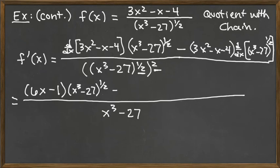And then we have minus the 3x squared minus x minus 4. And this last derivative here for the top is the one that requires the chain rule. And so we know that because it's ugly raised to a power, so to complete that derivative we bring the power down – 1 half. The factor remains the same – x cubed minus 27. And we subtract 1 from the old power. So 1 half minus 1 would give us the new power negative a half.